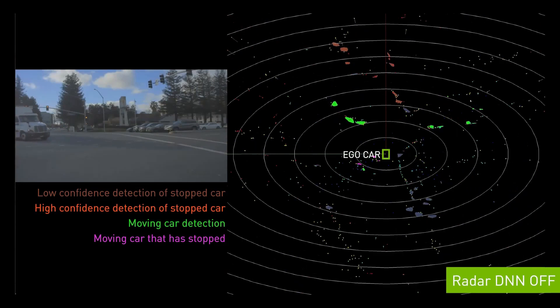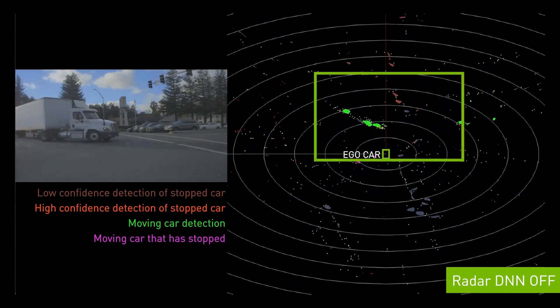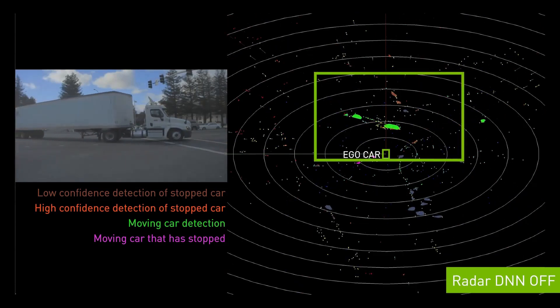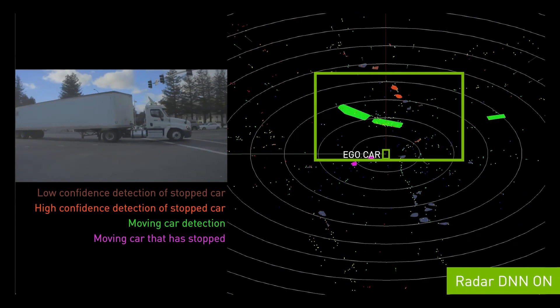In this video, the radar DNN is detecting a large truck that is turning in an intersection. These radar DNN results are particularly helpful for improving traditional radar clustering.